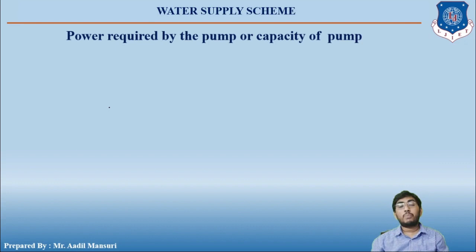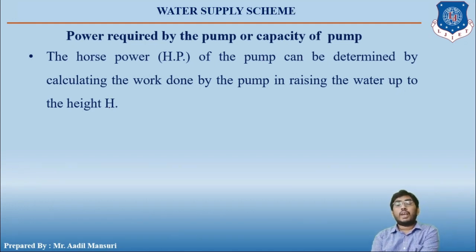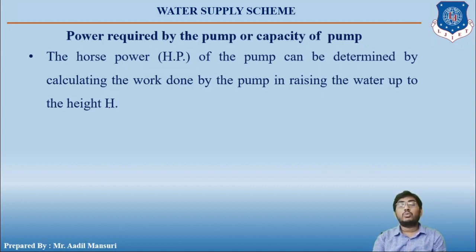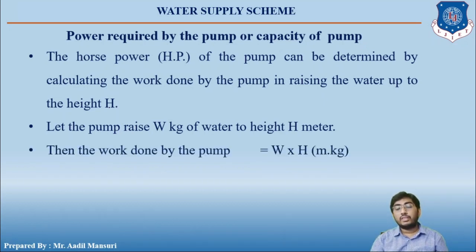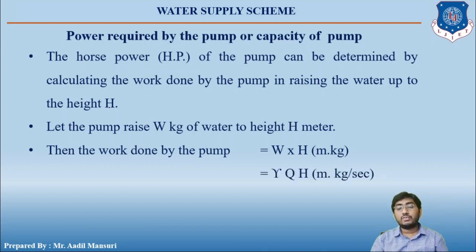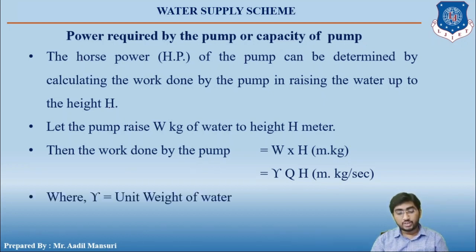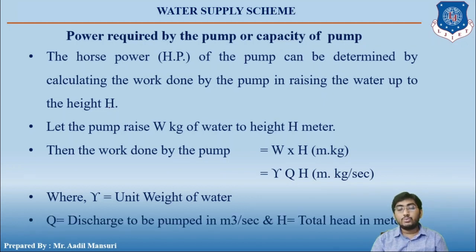Now let us talk about the power required by the pump. The horsepower of the pump can be determined by calculating the work done by the pump in raising the water to height H. If the pump raises W kg of water to height H meters, then the work done equals weight times height. Replacing weight with density times discharge gives: γQH, where γ is the unit weight of water, Q is the discharge in m³/s, and H is the total head in meters.